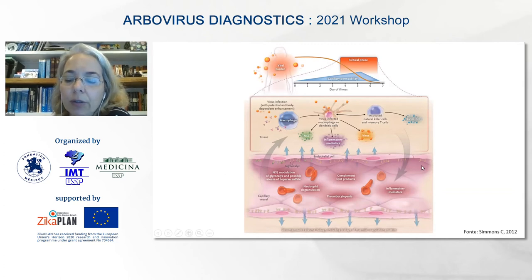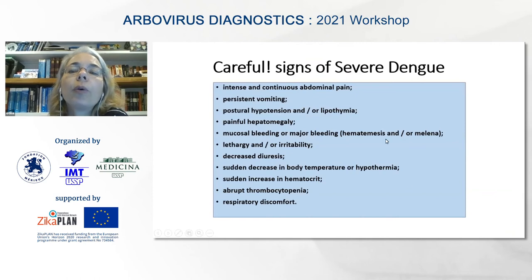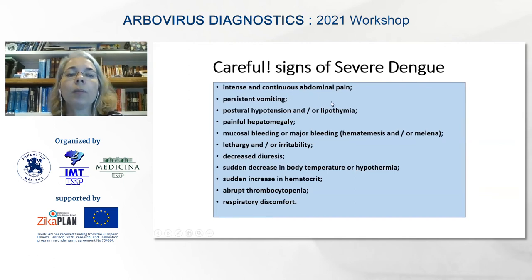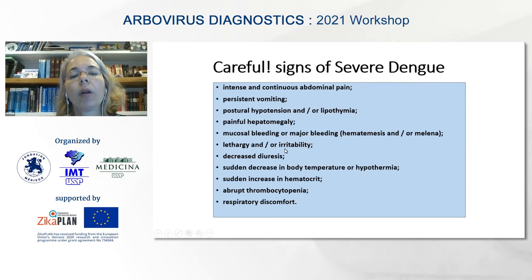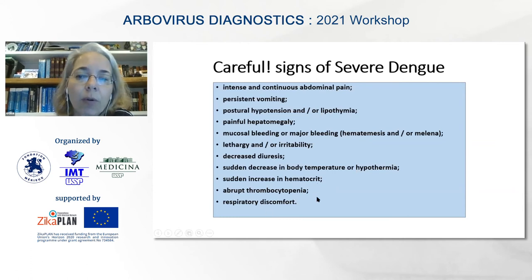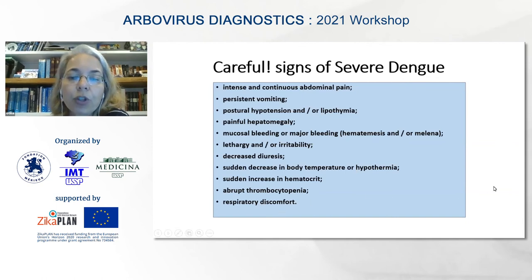There is no real damage to the endothelium tissue, so when we enter the red zone, we have to look for: continuous and intense abdominal pain, persistent vomiting, postural hypotension or lipothymia, painful hepatomegaly, bleeding, lethargy, irritability, sudden decrease in body temperature or hypothermia, sudden elevation in hematocrit, abrupt thrombocytopenia, and respiratory discomfort — all showing insufficient tissue perfusion and that the patient is heading toward collapse shock.